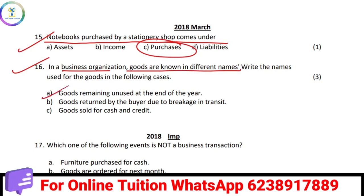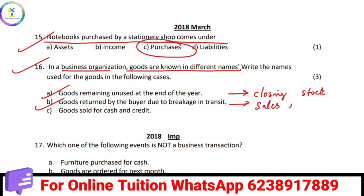The goods remained unused at the end of the year — what do we call those goods? Closing stock. Goods returned by the buyer due to breakage in transit — what do we call that? Sales return.